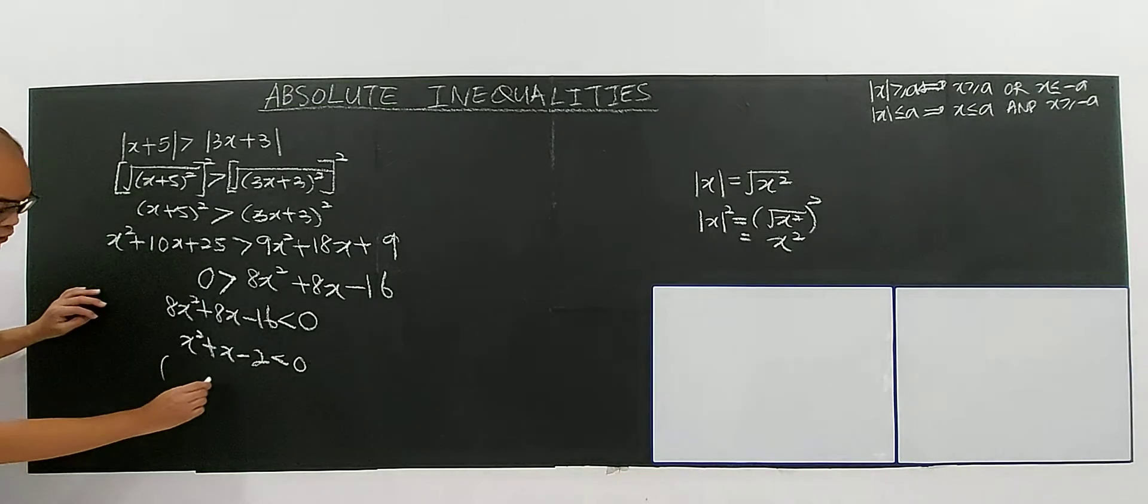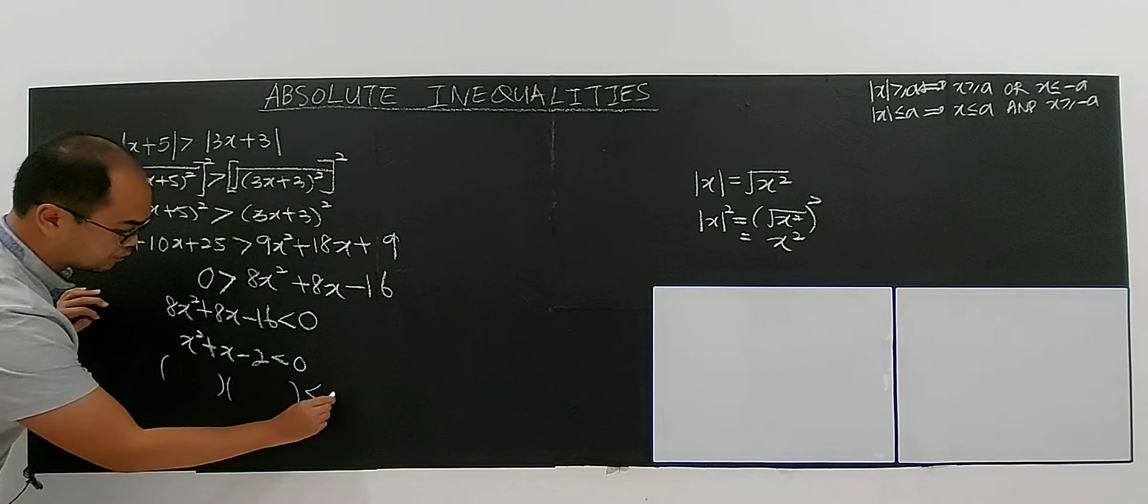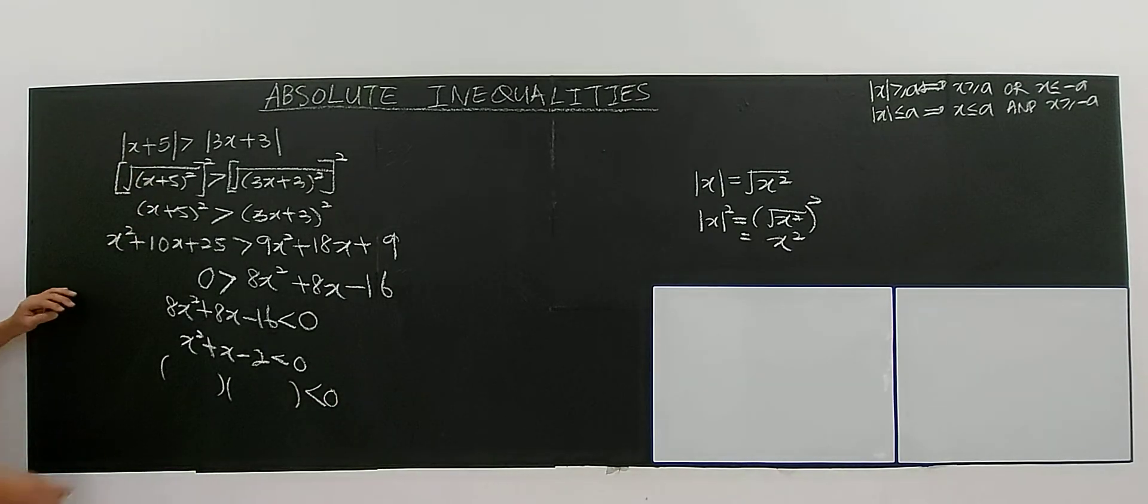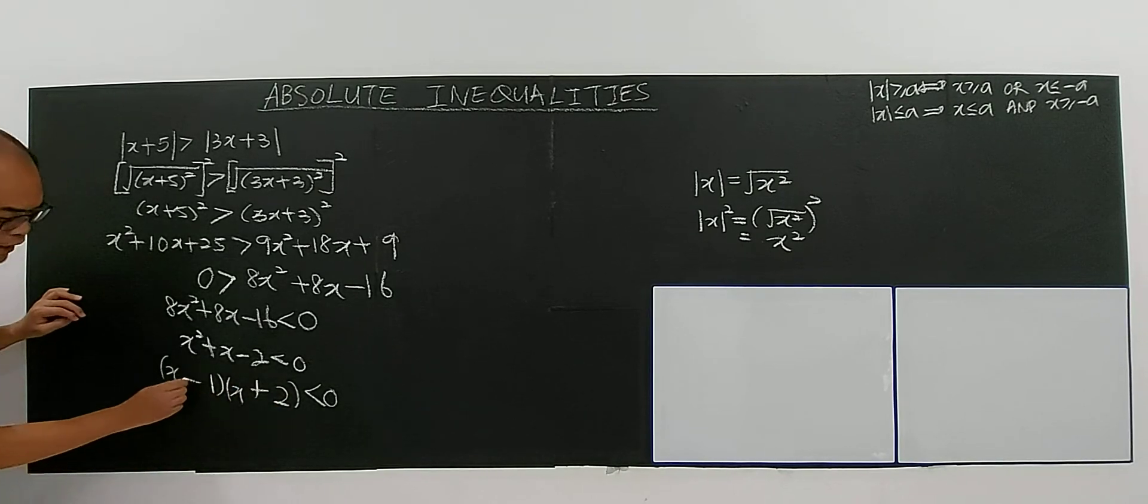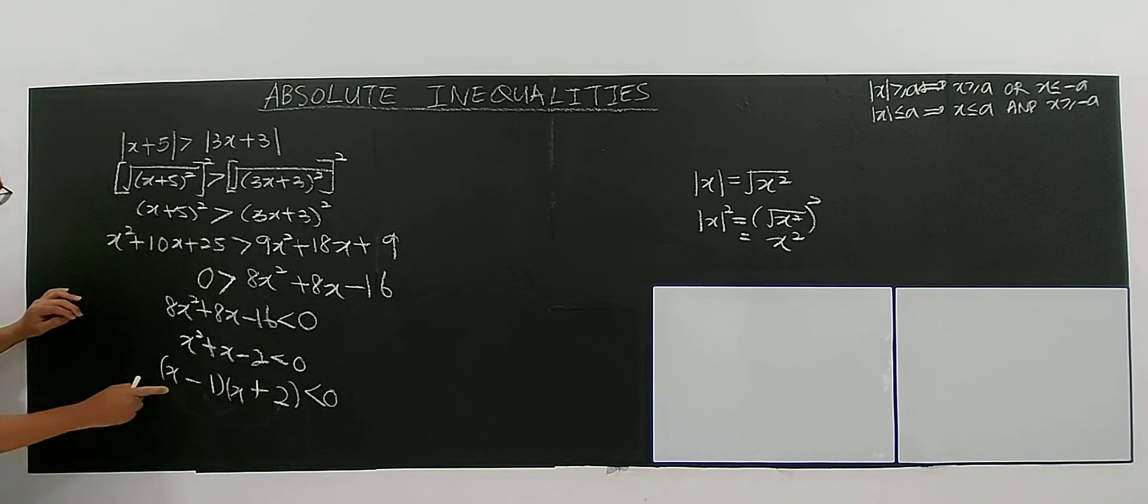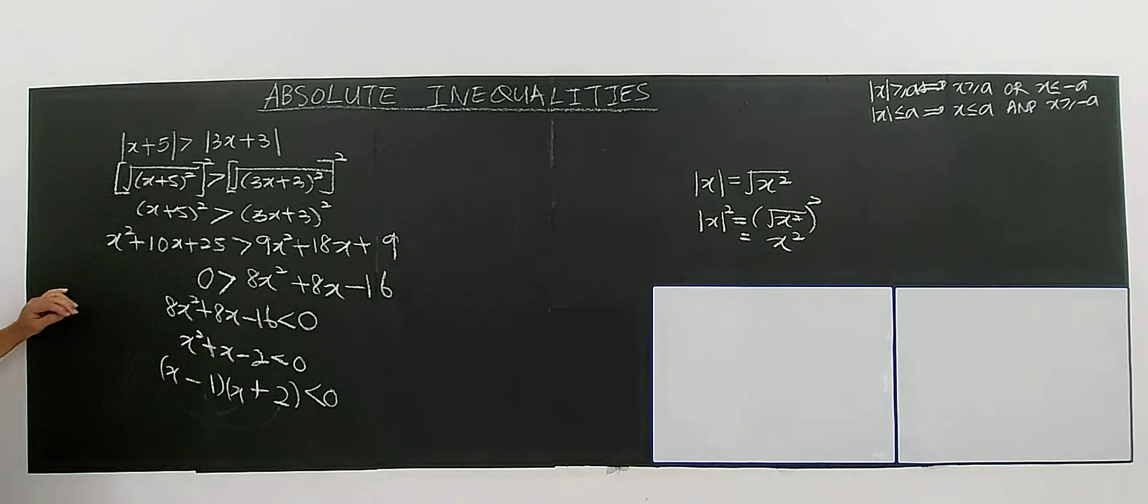And as usual, you factorize. And you have x, x, 1 and 2. Positive and negative. Negative x plus 2x, you have positive x.